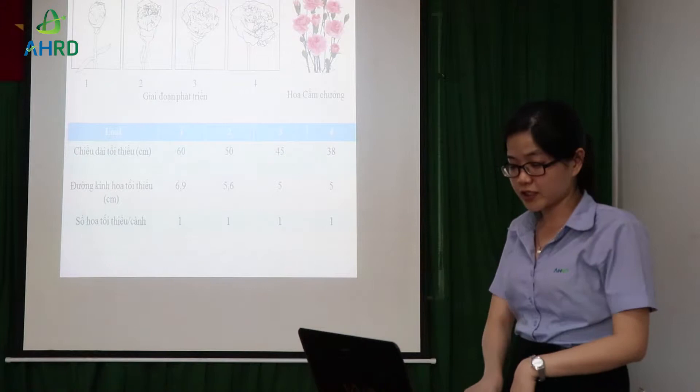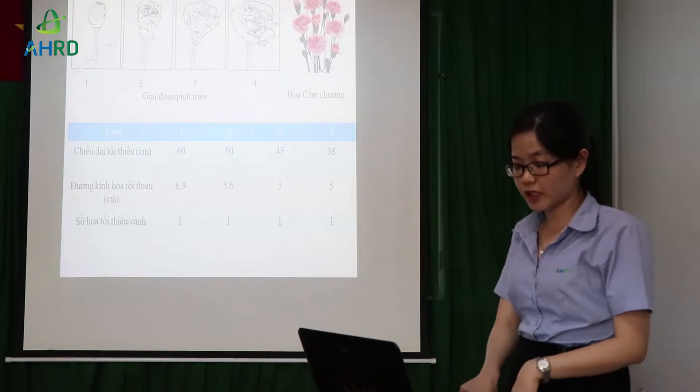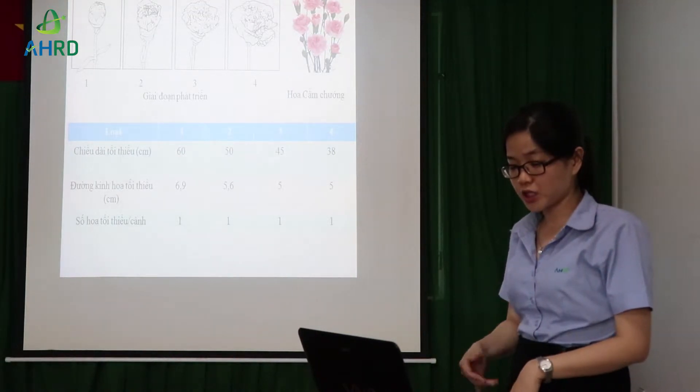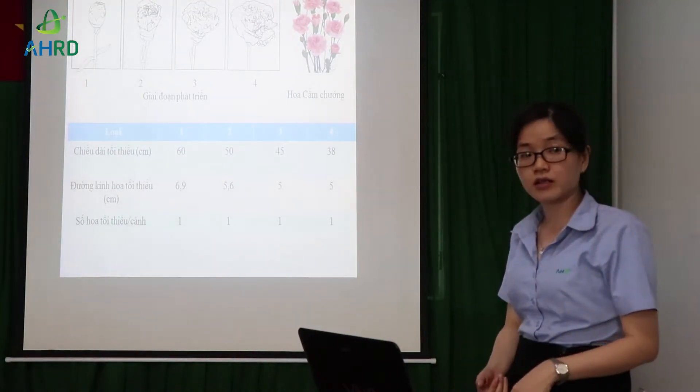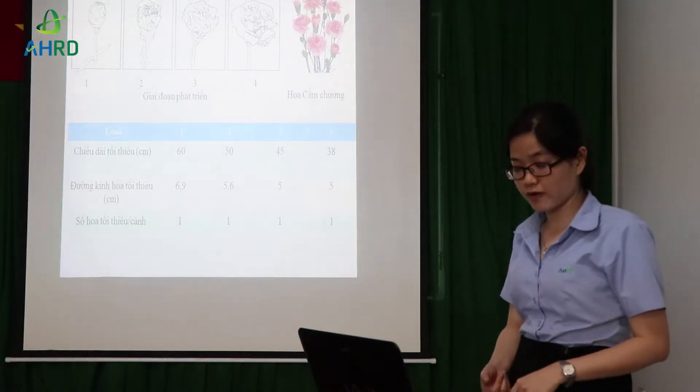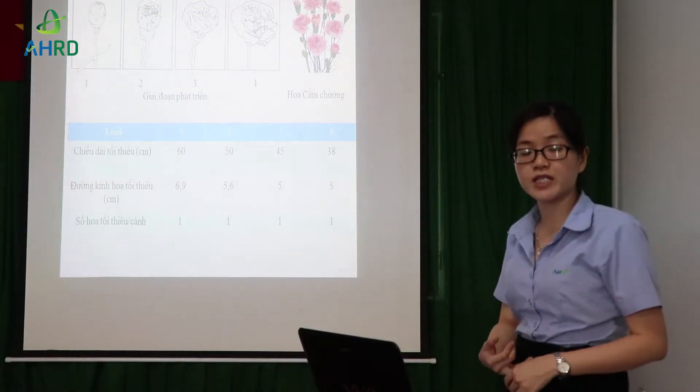Về phân loại thì chúng ta có thể phân loại theo chiều dài tối thiểu của cánh hoa, đứng kiến hoa tối thiểu và số hoa tối thiểu trên cành.